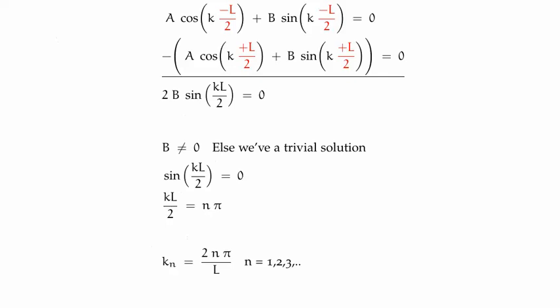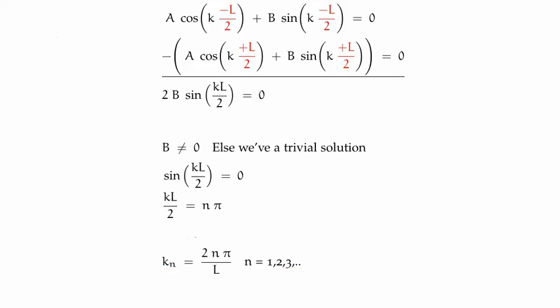In other words it appears we have two different functional forms of our wave number, and I'm wondering if there's any way to reconcile that. Of course there is. What we're going to do is divide by 2 here and then restrict the principal quantum number for these solutions only to even integers.